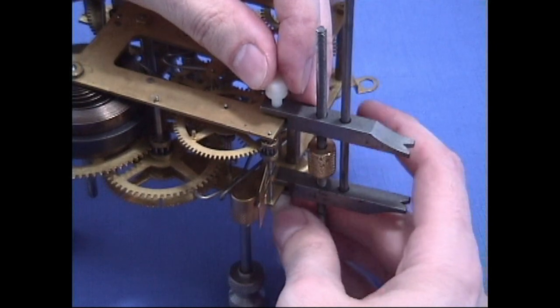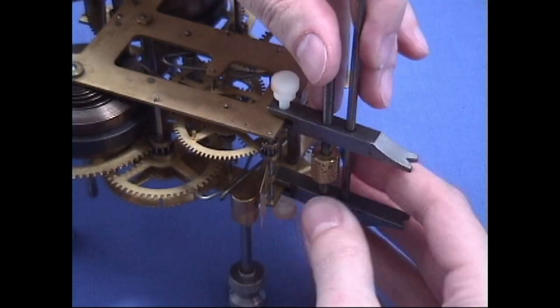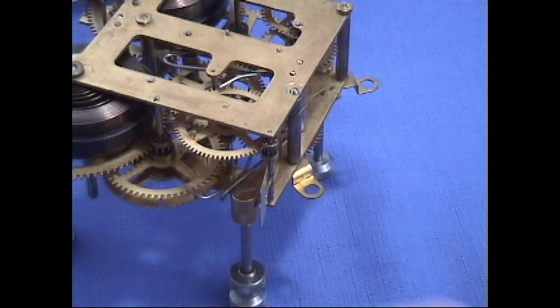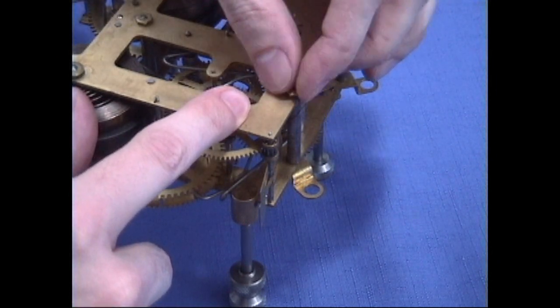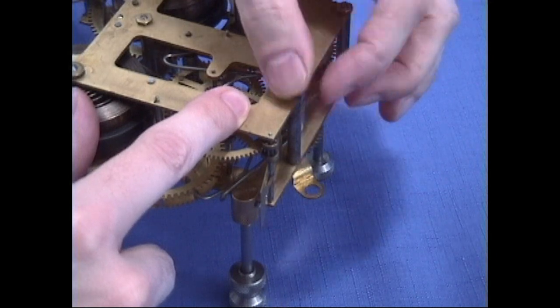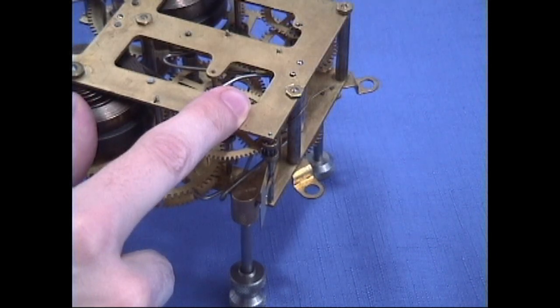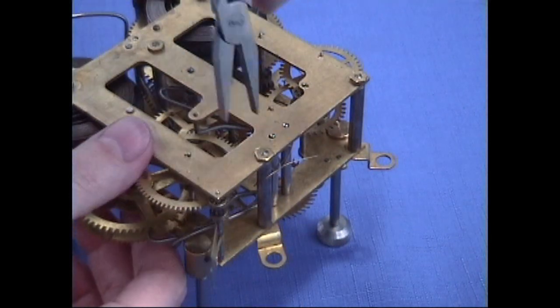Just remove these nylon thumb screws here. Take that off. Now we can go and put our nuts back on. Tighten them down and we're in good shape.